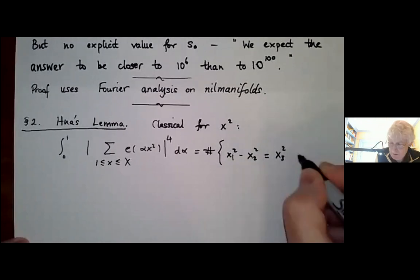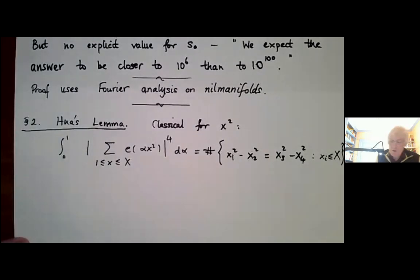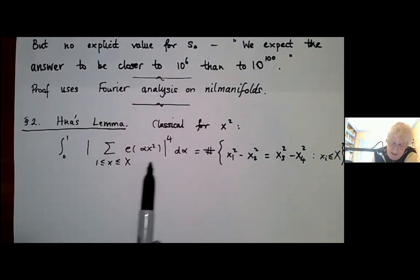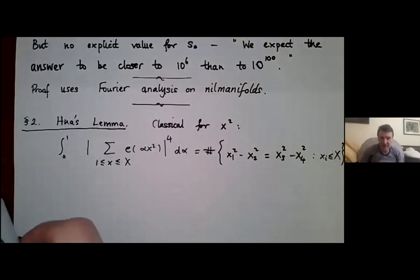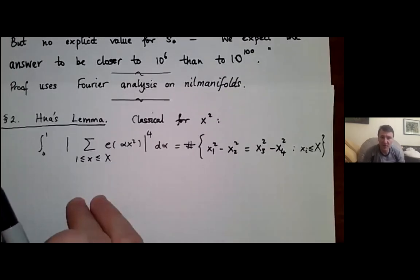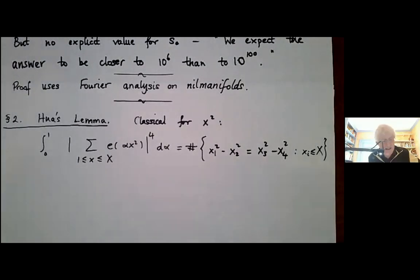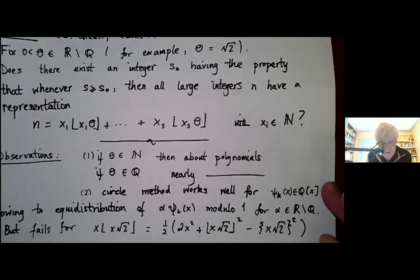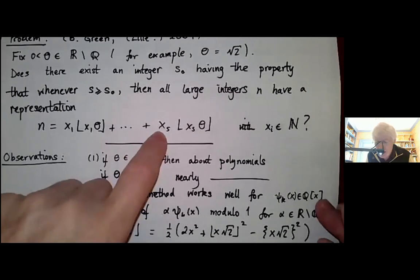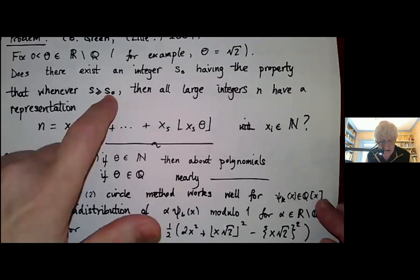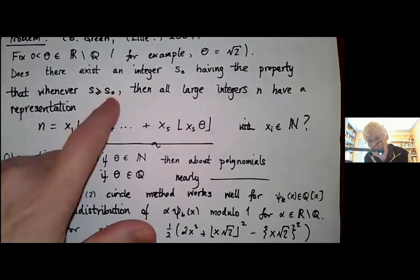By bilinearity, the mean value here is counting solutions of a Diophantine equation. There's a question from the audience: is the bound for s₀ uniform in θ? I think in Vicki's work it is, and in what I'll present it certainly is. You can get improvements for certain values of θ, but I think there's an absolute s₀ independent of θ. So the short answer is yes.